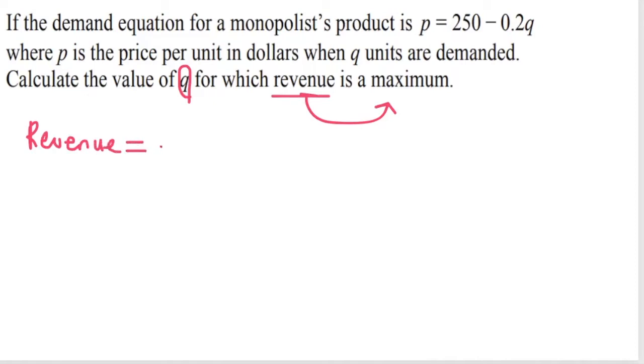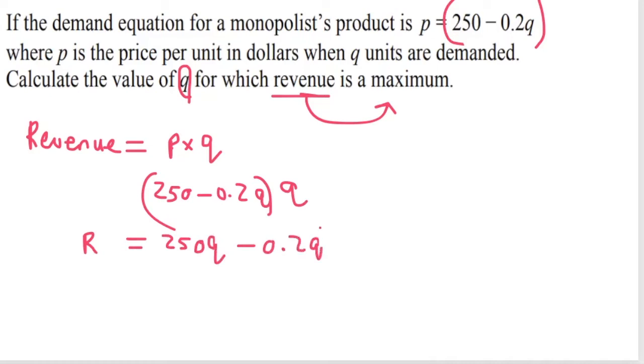Now, as stated before, revenue is equal to price times quantity. This is our price function. So price is 250 minus 0.2Q times quantity, which is Q. So multiplying this, R is equal to 250Q minus 0.2Q squared. Now, this is our revenue function.